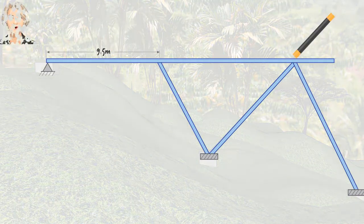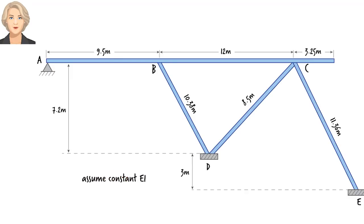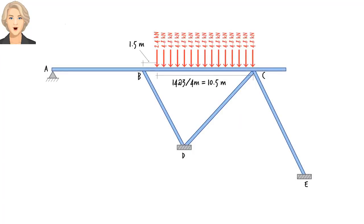Here are the key dimensions of the frame. Let's assume a constant EI for the entire steel structure. Note that since the cantilever beam segment to the right of joint C is not subjected to any loads, it is not going to carry any internal forces either. Therefore, to simplify our analysis, we are going to remove that segment from our diagram.